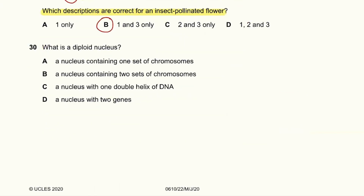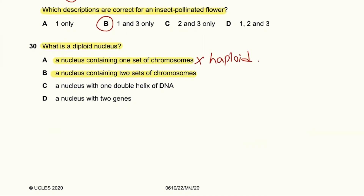Question 30: What is a diploid nucleus? A haploid nucleus contains one set of chromosomes, so that is wrong. A nucleus containing two sets of chromosomes is correct — a diploid nucleus does contain two sets of chromosomes. So B is the correct answer. The other options — one double helix of DNA, or a nucleus with two genes — are obviously wrong.